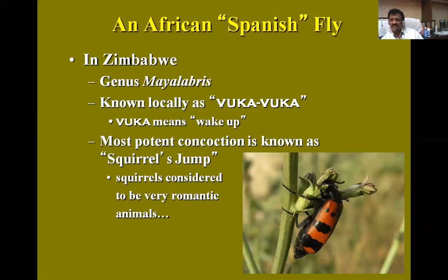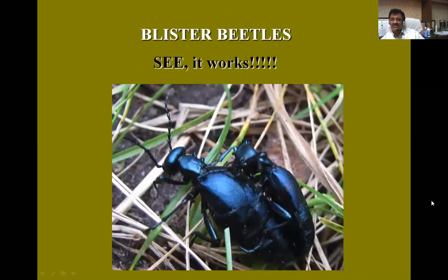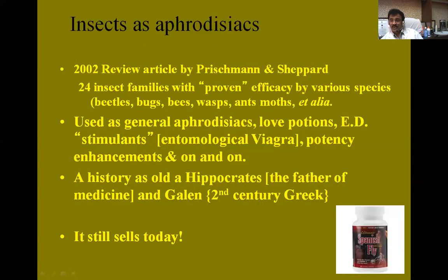The African Spanish fly, which you can see through this image, is usually found in Zimbabwe in Africa. Its genus is Mylabris, and locally it is known as Uka Uka, which means 'wake up.' The most potent concoction is known as spiral's jump, because spirals are considered to be very romantic animals. Blister beetles are also poisonous. Insects as aphrodisiacs are in use — aphrodisiac means a medicinal effect, usually a stimulant for the purpose of sexual activity.